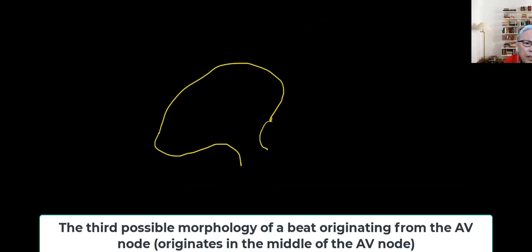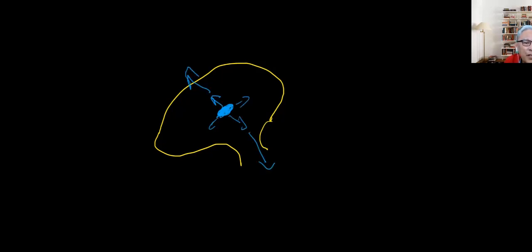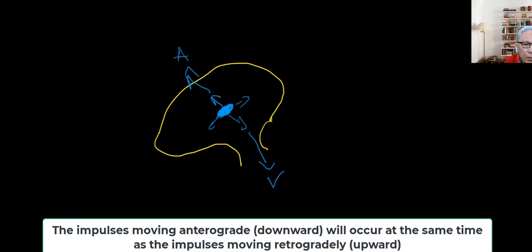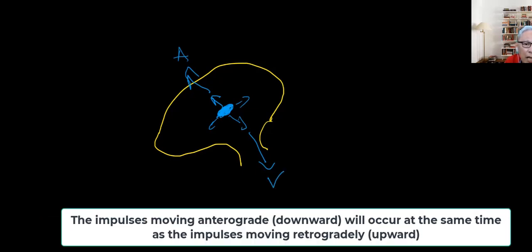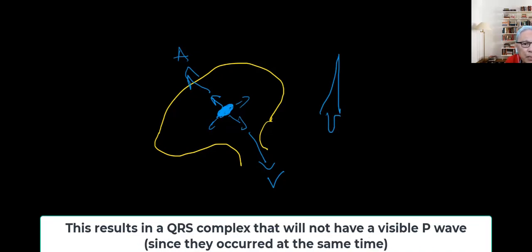And now the impulse is coming right in the middle of the AV node. So the spark is going to go like this. And so the movement of this current is going to occur at the same time going up into the atria as well as into the ventricles. So technically, you will have a QRS complex and a P wave that is inverted occurring at the same time. The ECG can only record one waveform at a time, so it will always record the biggest or the strongest waveform.